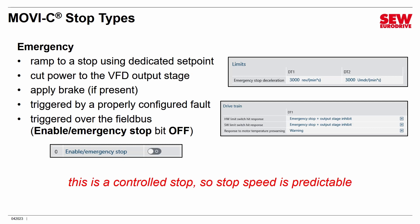The emergency stop is similar to an immediate stop in urgency but behaves differently. Instead of just cutting power, it does a controlled ramp to a stop using a dedicated set point — for example, 3000 RPM per second — bringing the VFD to a predictable stop. The stop time is predictable under normal conditions. It does the ramp first, then cuts power to the output stage, then applies the brake if present. You can invoke an emergency stop by associating it with a fault such as limit switches, or by transmitting the emergency stop bit over the field bus.